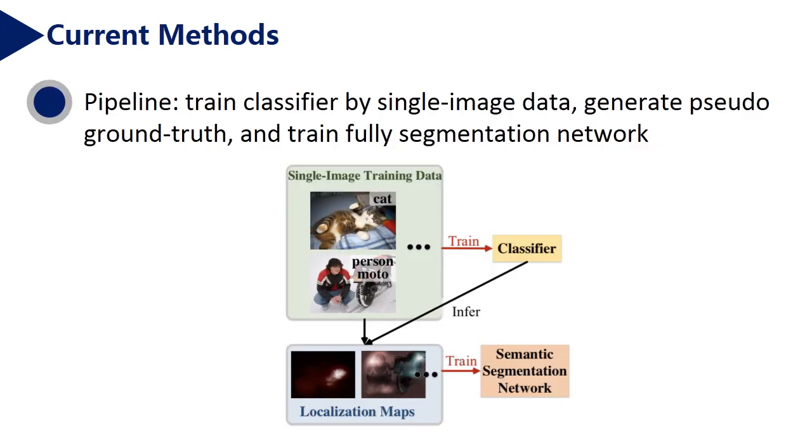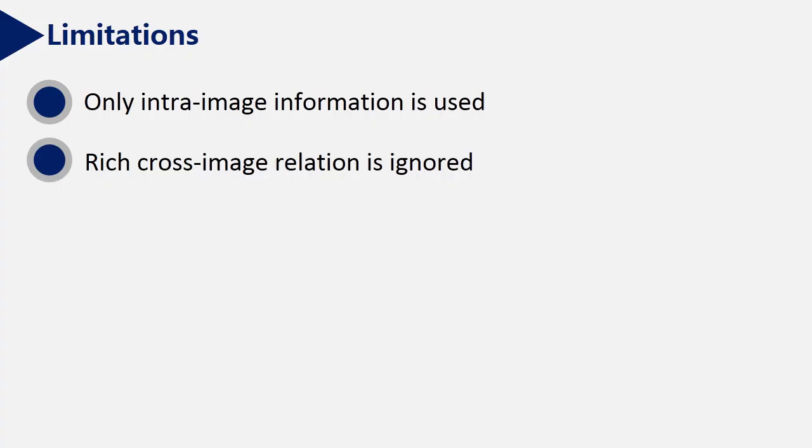Current popular solutions typically follow this pipeline. First, train a classifier by single image data, then generate through the ground truth, and finally train fully segmentation network. However, they all have common limitations. Since they use only single image data, only intra-image information is considered, and a rich cross-image relation is ignored.